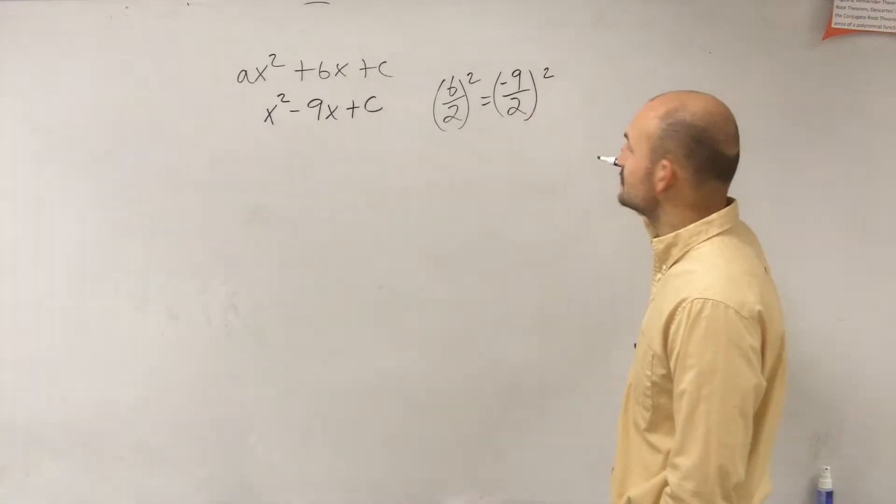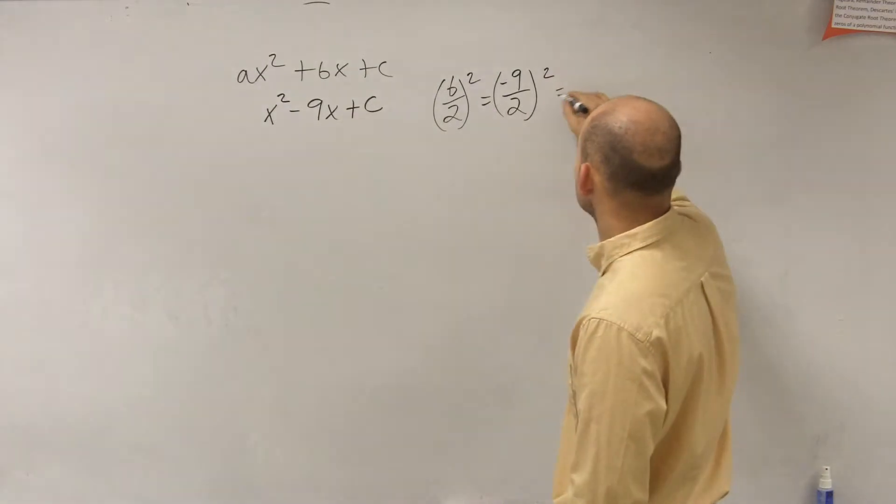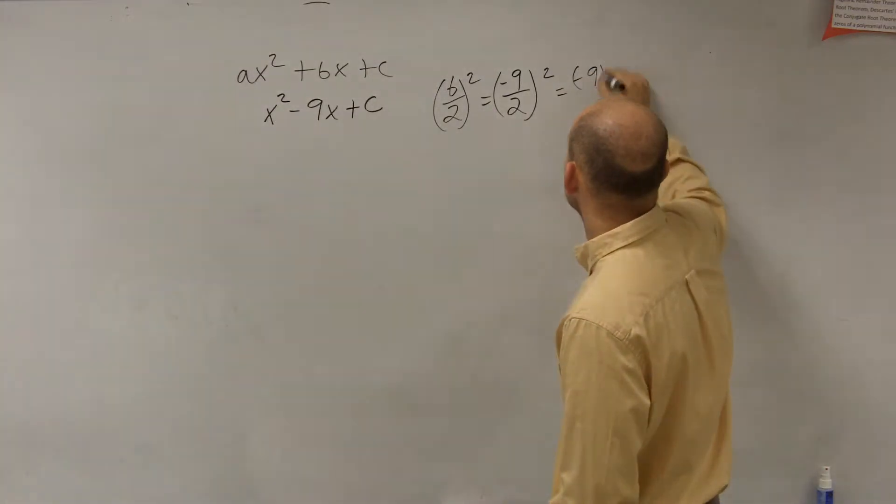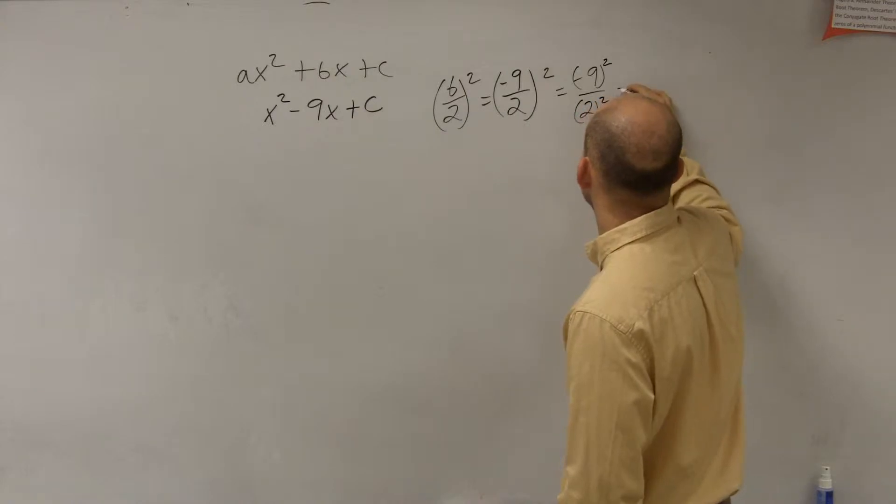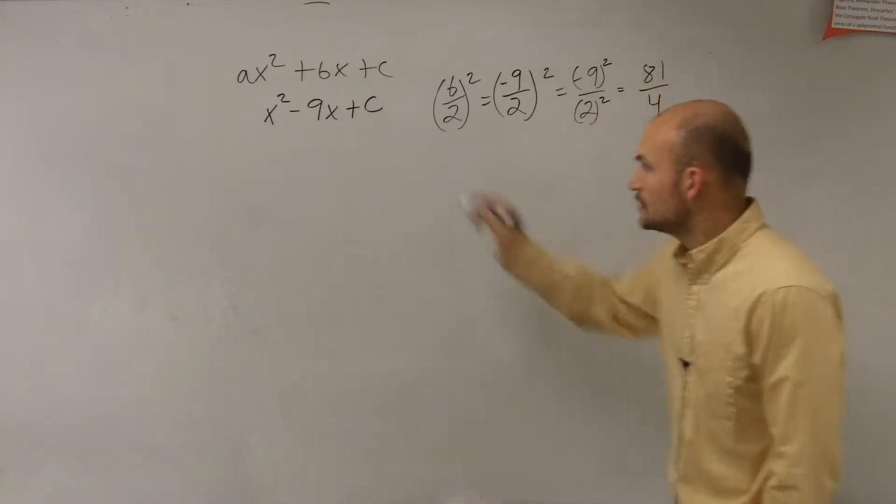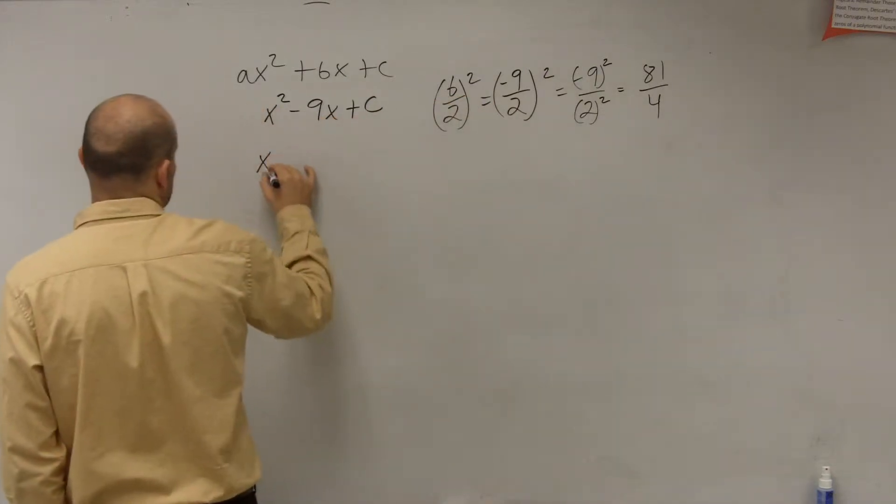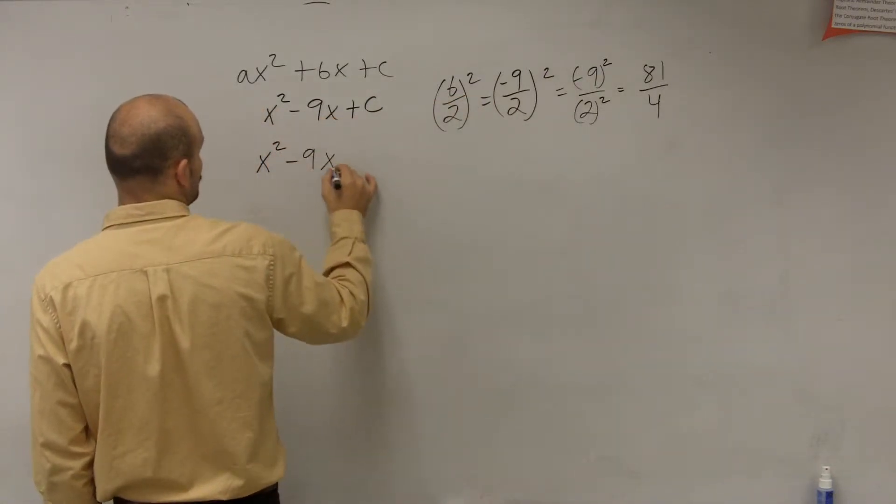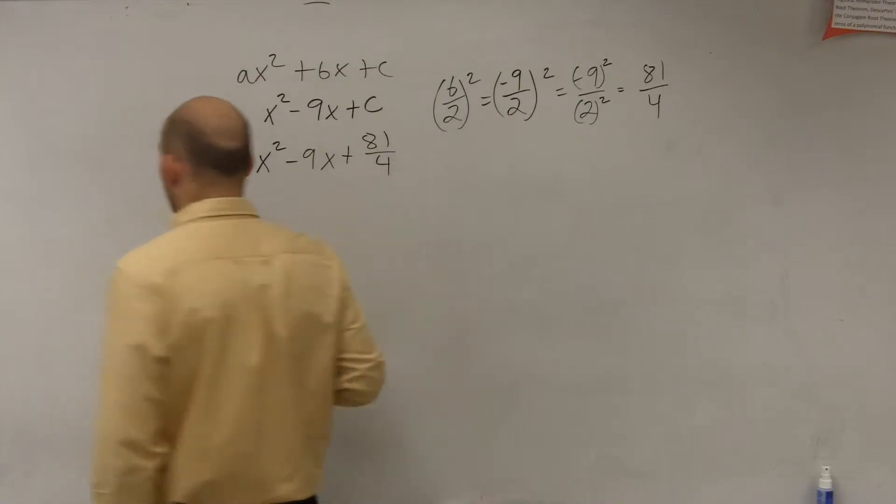So when squaring negative 9 halves, that is the same thing as negative 9 squared over 2 squared, which equals 81 over 4. So therefore, the value of c that makes this a perfect square trinomial is 81 over 4.